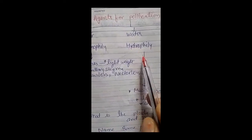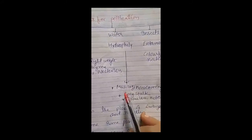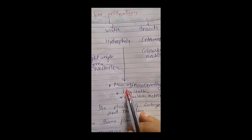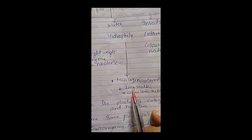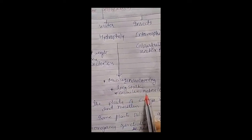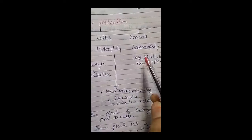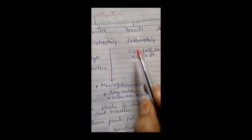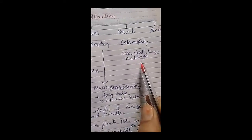Water-pollinated flowers, known as hydrophily, generally have pollen grains covered by a mucilaginous coating to protect them from water currents. They typically have long stalks and long stigmas, and the flowers are colorless and nectarless. Flowers pollinated by insects, known as entomophily, are colorful and large in order to attract insects, and they produce nectar — they are rich in nectar and fragrance.